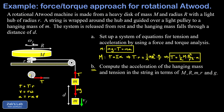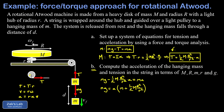Solving gives T equals one-half big M times big R squared over little r squared times a. Now we have our system of equations and can solve by substitution. The second equation is already solved for T, so we substitute into the first equation: mg minus one-half big M times big R squared over little r squared times a equals ma. Moving both a-containing terms to the right and factoring out a gives a times the quantity little m plus one-half big M times big R squared over little r squared.